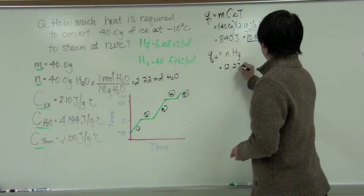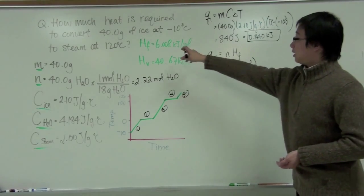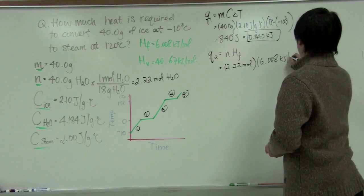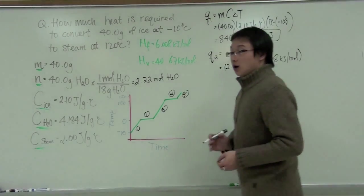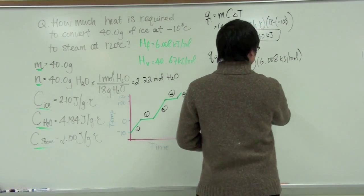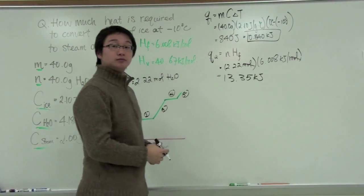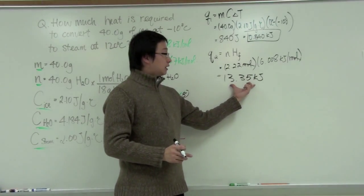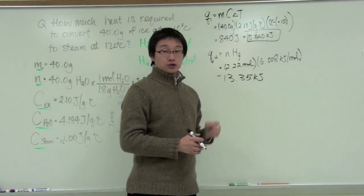And then we can plug in the HF, the heat of fusion, which is given in this case. So we can just simply use a calculator and find out what the value is. So the mole here will be cancelled out. So we now have the amount of energy for the second part of the graph. And now you can see all the units are matched, they are all in kilojoules.